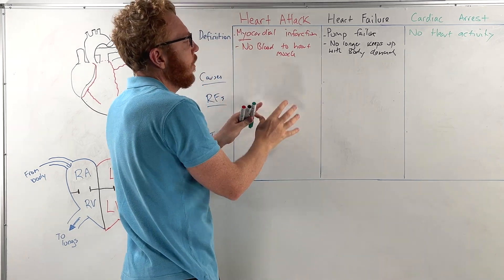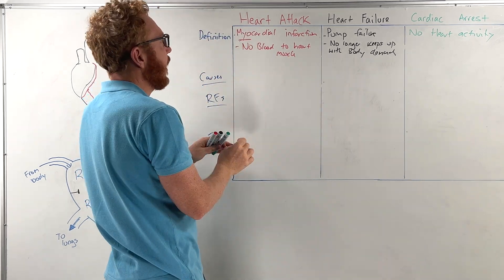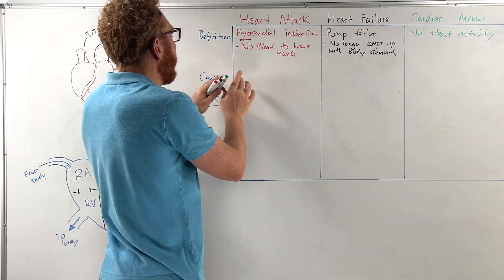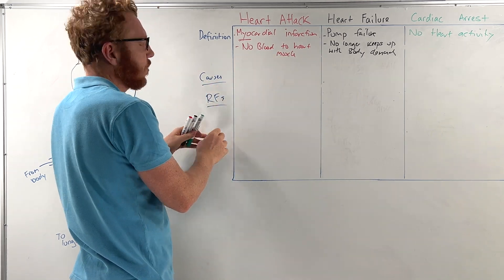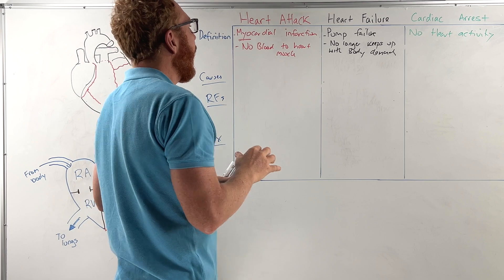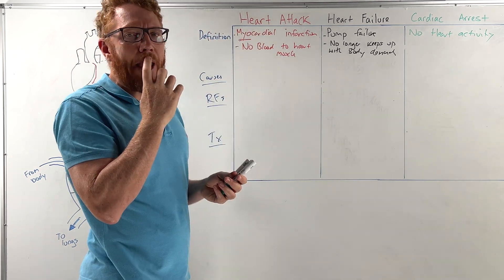Now what I'll do is jump in and go through these things together. With a heart attack, I'm going to go through the common causes, the risk factors, treatment. So with a heart attack, we've seen that it's called an MI.